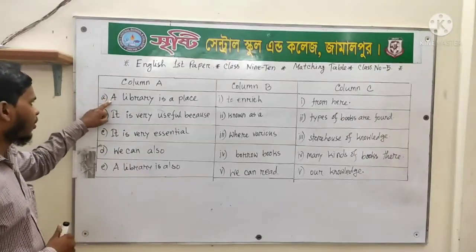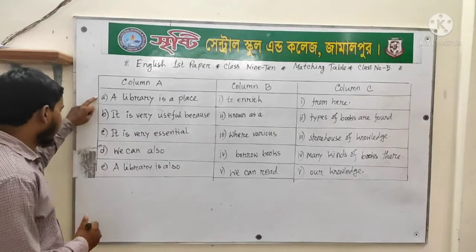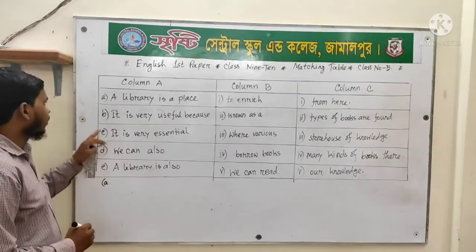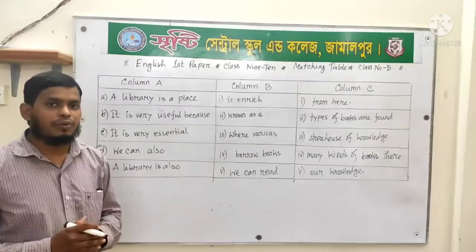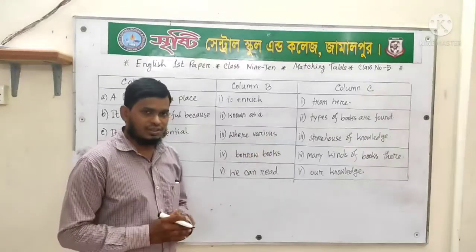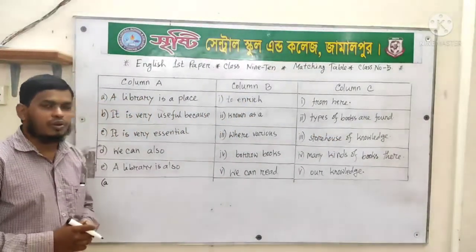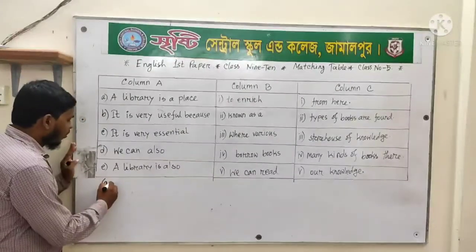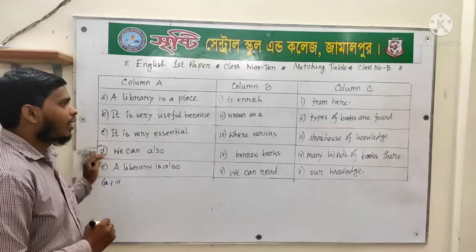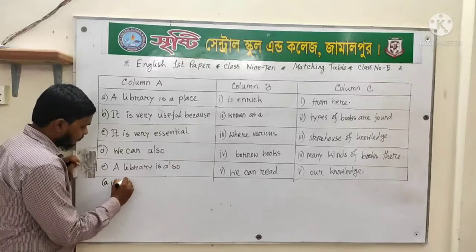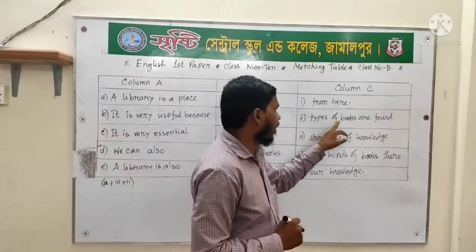From the first column, the first part of the sentence is: 'A library is a place.' This is the first part, number A. The complete sentence is: 'A library is a place where various types of books are found.' Look at the blackboard — number A plus number 3 from the second column and number 2 from the third column. This is our first line: 'A library is a place where various types of books are found.'